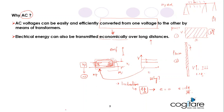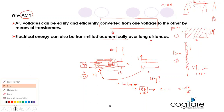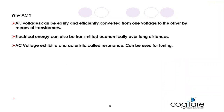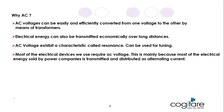That is why AC is preferred over DC. AC voltage also exhibits a characteristic power resonance which can be used for tuning. Most electrical devices we use require AC voltage, and most electrical energy sold by power companies is transmitted and distributed as alternating current.